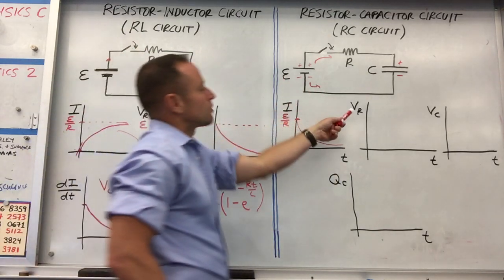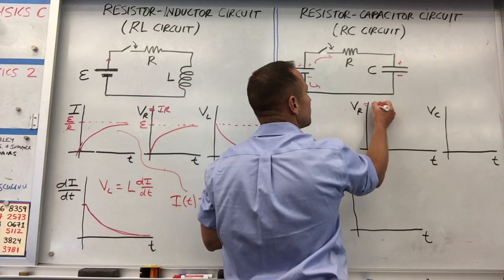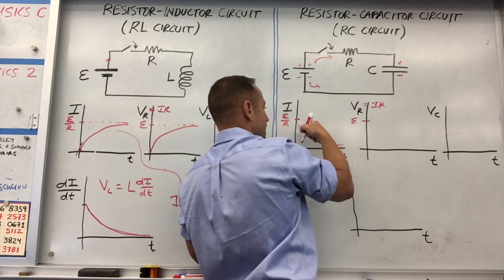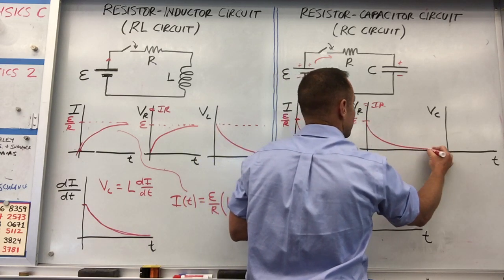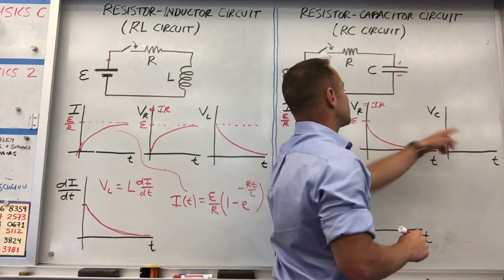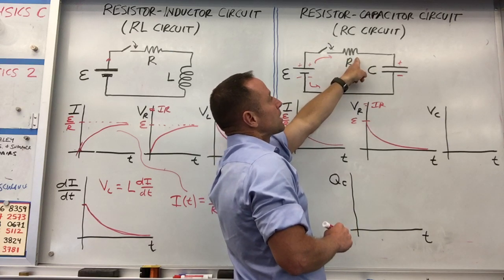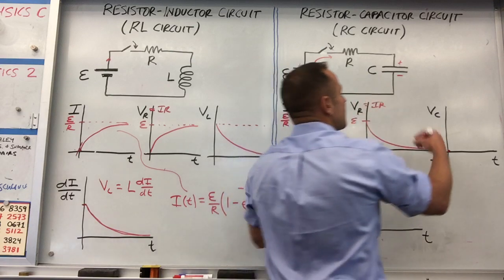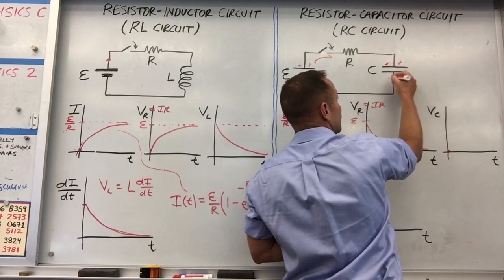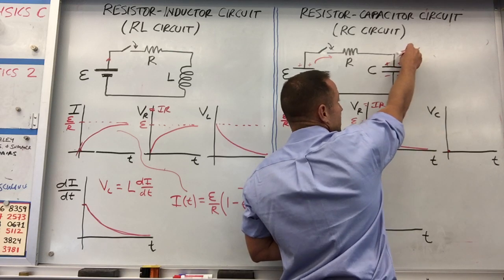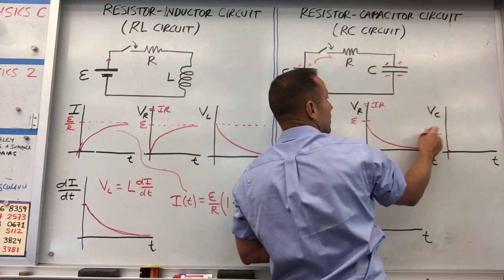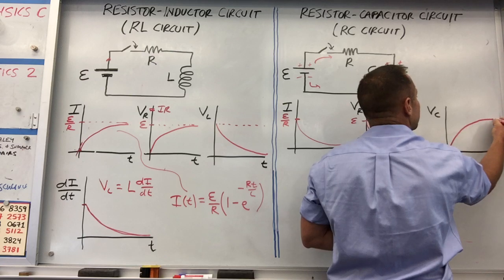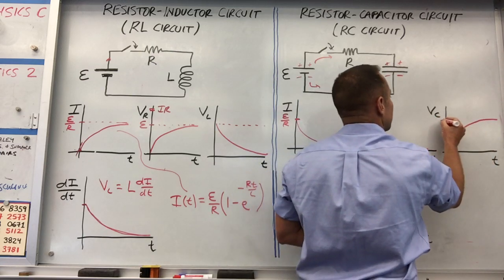The voltage drop across the resistor is just IR, so it follows the same shape as current — it starts at the battery voltage and tapers down. Since the resistor and capacitor voltages must add to the battery voltage, whatever the resistor doesn't have the capacitor must have. At the beginning all voltage drops across the resistor and none across the capacitor. Eventually the plates fill up fully, current goes to zero, no drop across the resistor, and all voltage drops across the capacitor — so capacitor voltage builds up like an exponential approach.